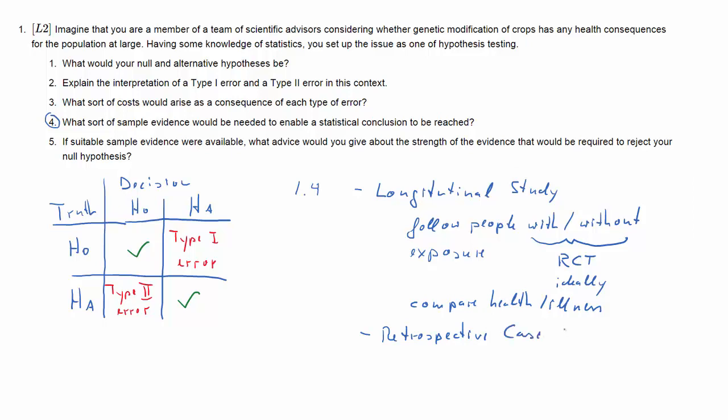The second sort of evidence you may want to look at is what's called retrospective case-control studies. Here you find a group of people that has some sort of health problem.